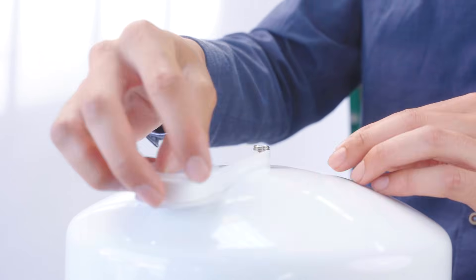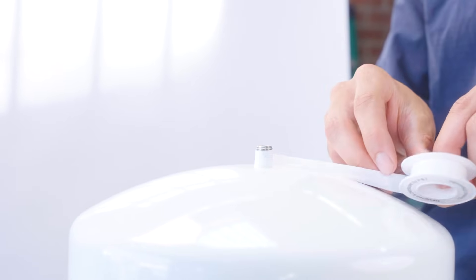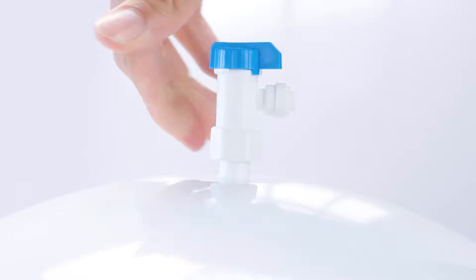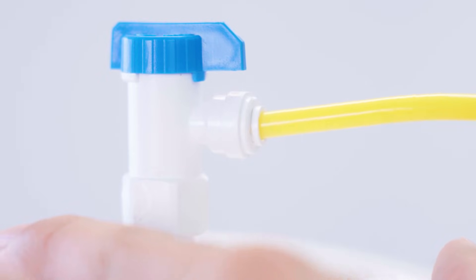Wrap the tank's threaded port with five turns of Teflon tape. Thread on the ball valve tight, but don't crank it. Leave a slight gap. Then connect the yellow tube.